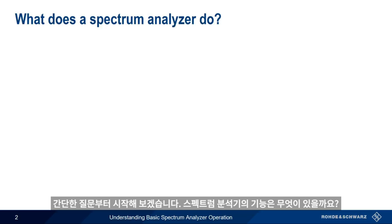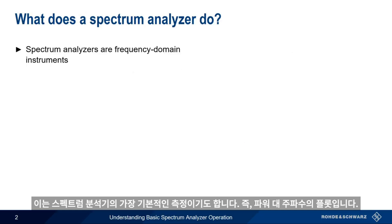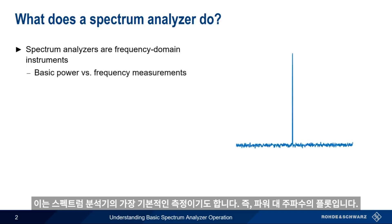Let's begin with a simple question: what do spectrum analyzers do? Spectrum analyzers are frequency domain instruments — that is, they show power versus frequency. This is also the most fundamental measurement on a spectrum analyzer: a plot of power versus frequency.